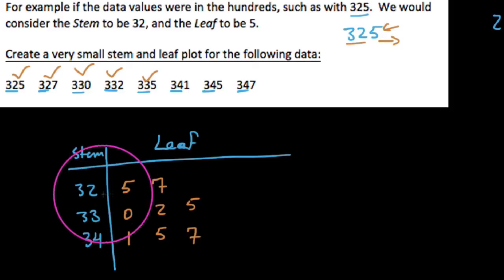So you can see how we would read this here. 325, 327, 330, 332, 335, 341, 345, and 347. We could read through this rather quickly. But that is how you do a stem-and-leaf plot when you have sometimes more than one leading digit. Cheers.